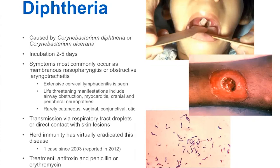You can have it affect other parts of the body as well. You can have a myocarditis, cranial and peripheral neuropathies. And rarely you can have cutaneous, vaginal, conjunctival, or ear infections. That second picture is a cutaneous infection.